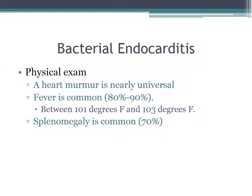Turning to the physical exam findings in bacterial endocarditis, starting with the most common: a heart murmur is nearly universal. Fever is common as well, seen in 80 to 90% of patients with bacterial endocarditis, typically between 101 and 103 degrees Fahrenheit. Splenomegaly is common as well, seen in about 70% of cases.